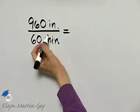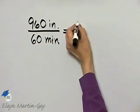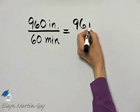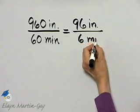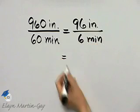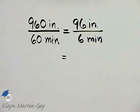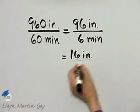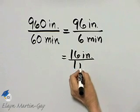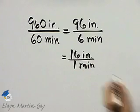I do know each has a common factor of 10, so this is the same as 96 inches over 6 minutes. And actually 6 divides into 96 16 times. So this is the same as 16 inches over 1 minute.